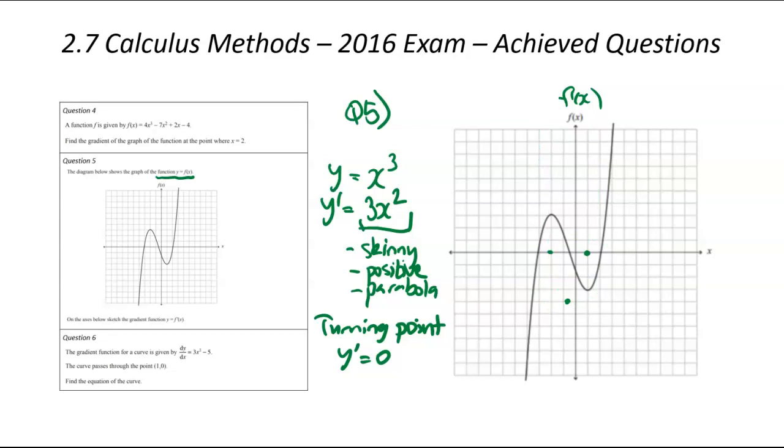But let's have another go. Let's smooth out the bottom a bit more. There we go. That's a bit better. Yeah, forgive the shaky hands. So that there would be my sketch of the gradient function. It's a positive parabola. It's skinny. And it's got those two x-intercepts of the turning point at the appropriate part.